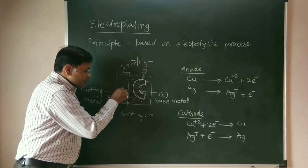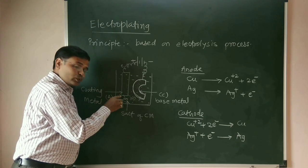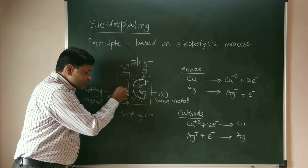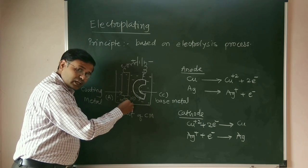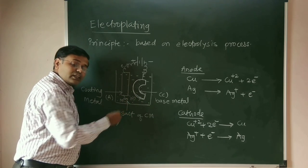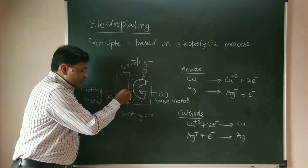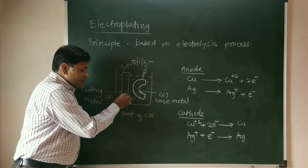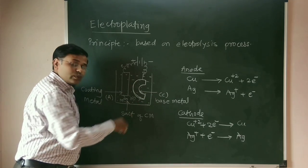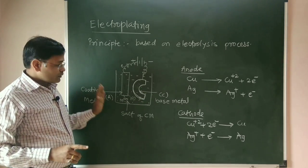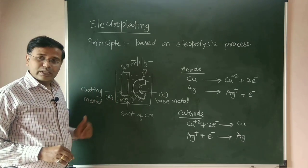If the anode — the coating metal — is impure, the impurities will settle down at the bottom of the container in the form of mud. But if the metal is pure, the loss in weight and gain in weight will be equal. That is about the electroplating process.